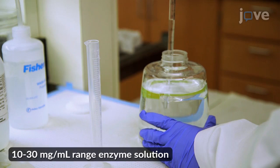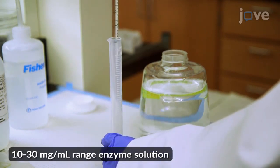To prepare the enzyme solution, in a 15 milliliter graduated cylinder, measure 8 milliliters of the 0.1 molar sodium acetate buffer. Then add the buffer solution into a 15 milliliter conical tube with enzyme.